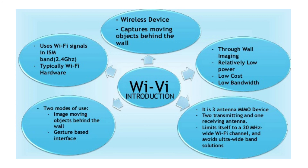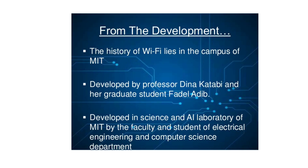Wi-Vi is a 3-antenna MIMO device with 2 transmitting antennas and 1 receiving antenna. It limits itself to a 20 MHz wide Wi-Fi channel and avoids ultra-wideband solutions. It was developed at MIT by Professor Dina Katabi and her graduate student Fadel Adib.